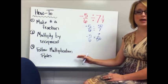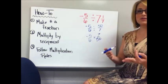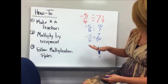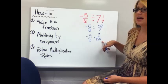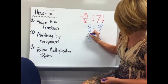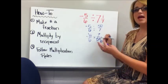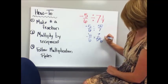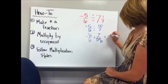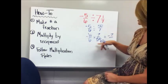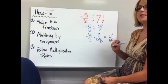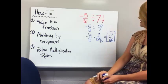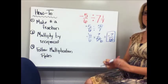Step 3: follow multiplication rules. The fractions are already in fraction form. Optionally cross-simplify: looking diagonally, 5 and 50 share a factor of 5, so they become 1 and 10. Then multiply straight across: negative 1 times 7 is negative 7, and 6 times 10 is 60. That cannot be simplified further, so the answer is negative 7 over 60.